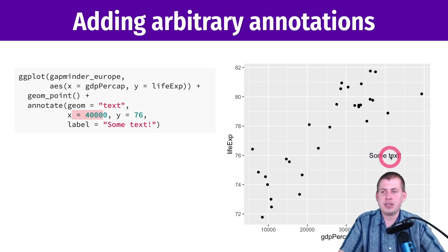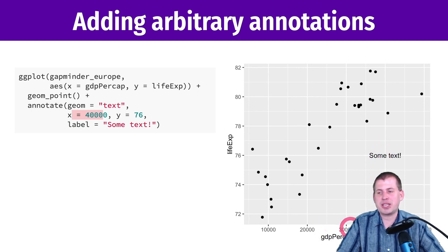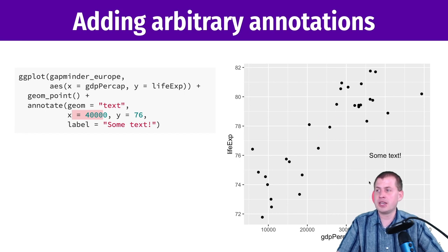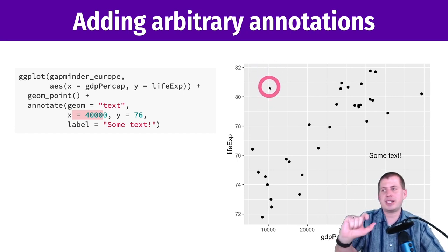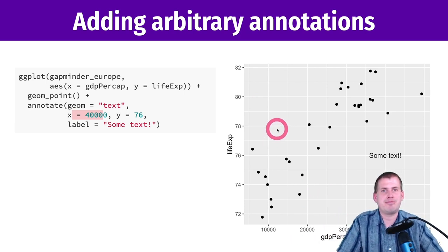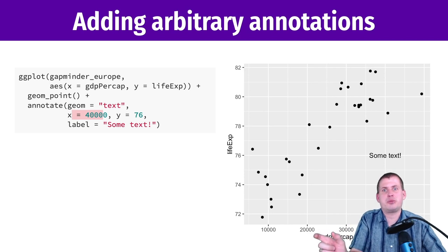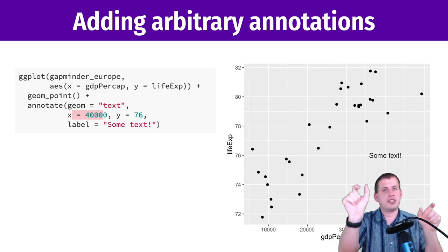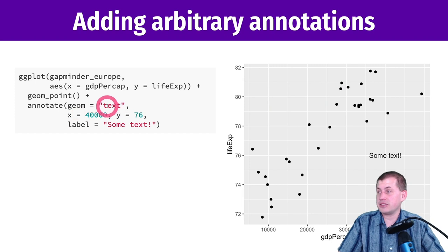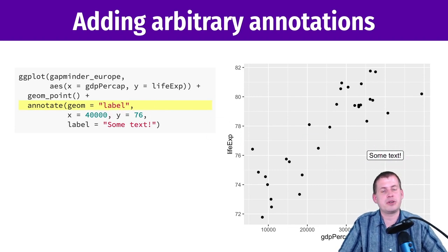In real life you don't just stick text there for fun — you use it to enhance interpretation. For a GDP per capita plot, you might put 'richer countries' in the bottom corner and 'longer lifespan countries' in the top corner to help readers understand axis direction. This is especially useful for weirder variables like change in odds from a regression model. You can also switch from geom 'text' to geom 'label' in annotate to get the fancy rounded-corner label shape instead of plain text.